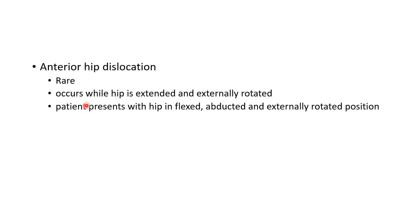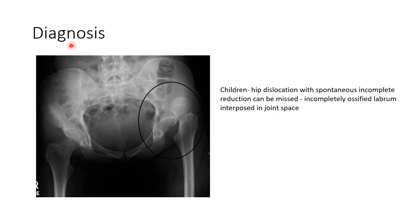Anterior hip dislocation is rare and it occurs while the hip is extended and externally rotated. In this case the patient presents with the hip in flexion, abduction, and external rotation.